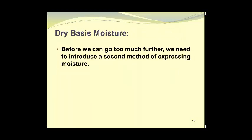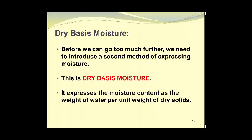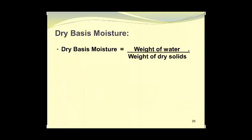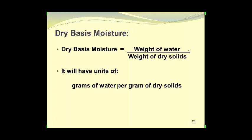Before we go further, we need to introduce a second method of expressing moisture: the dry basis moisture. It expresses the moisture content as the weight of water per unit weight of dry solids. The dry basis moisture is defined as the weight of water divided by the weight of dry solids, with units of grams of water per gram of dry solids, or kilograms of water per kilogram of dry solids — as long as the units are dimensionally consistent.